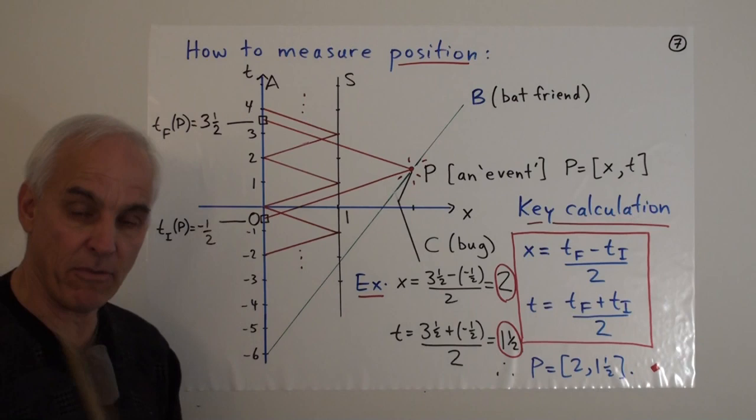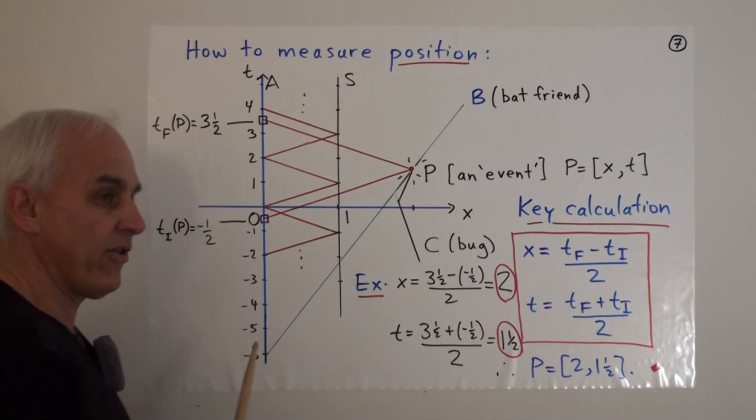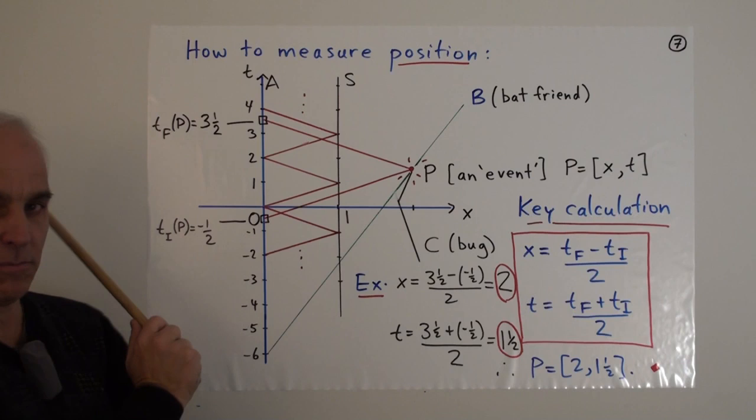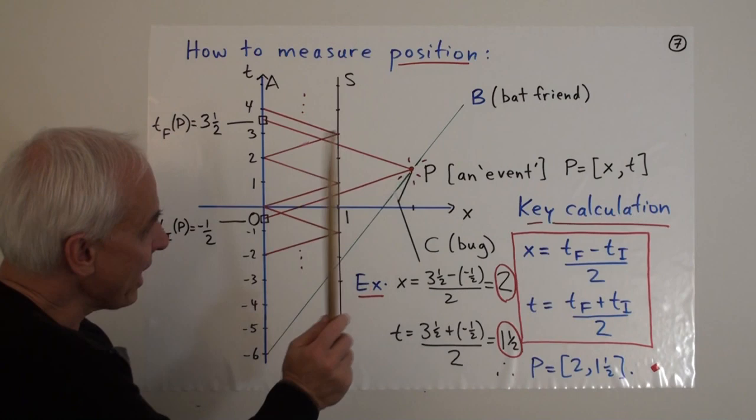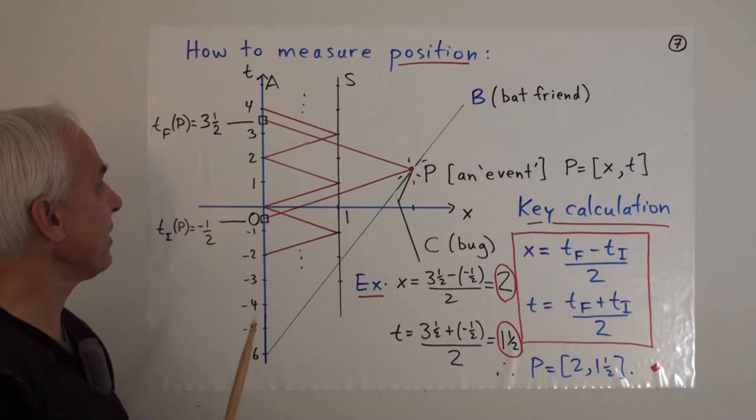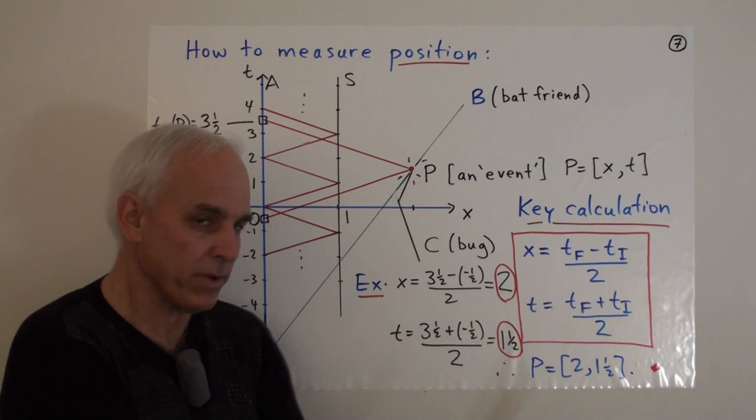We can, in our minds, remember that that click was sent at time t equals minus a half. We could call that the initial time of the event P from our point of view. And then when this sound wave comes back to us, we can register that return. We can call that t sub-final of the event P. And that's going to be between three and four. We'll just estimate what that is, say three and a half. So, we can be confident that this event P has the properties that the initial time that we sent off the click was at minus a half and we received that click back at three and a half.